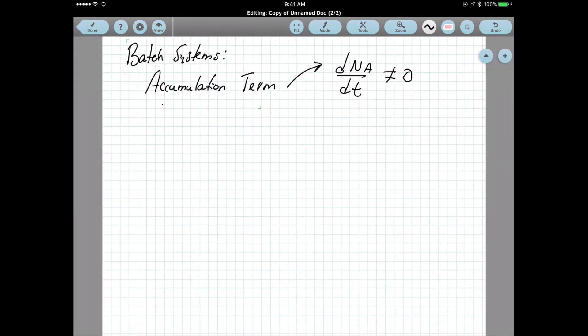So for batch systems, we can define, or we can assume, that the accumulation term is different than zero. That means that for the mass balance, this term is going to be important.